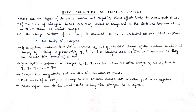Hello students, today we will learn the basic properties of electric charges. In the previous class we learned that there are two types of charges: positive and negative. Their effect in a body cancels out if the number of positive charges equals the number of negative charges, then the body is said to be neutral — a body with balanced positive and negative charges.